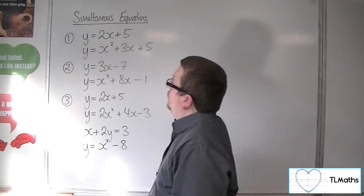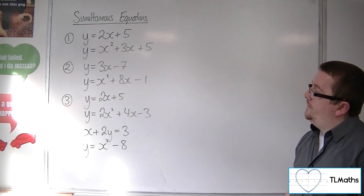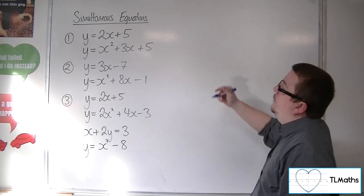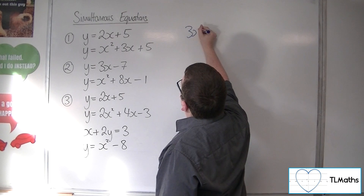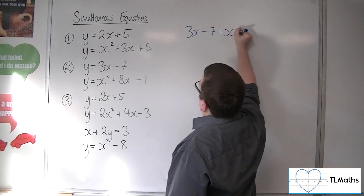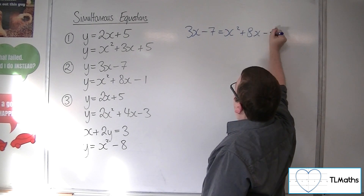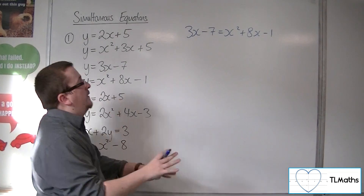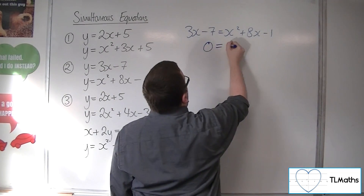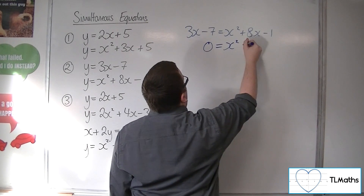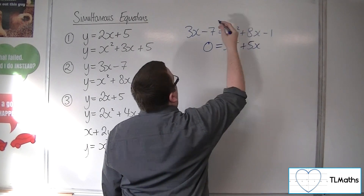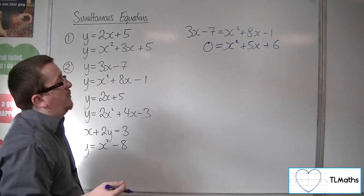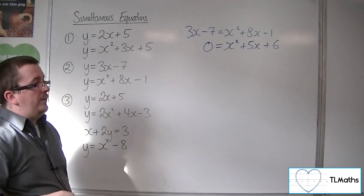For number 2, we have y equals 3x minus 7, and y equals x squared plus 8x minus 1. We're going to use a similar method — putting one equal to the other. If I move everything onto the right-hand side, subtracting 3x from both sides and adding 7 to both sides, I get 0 equals x squared plus 5x plus 6.